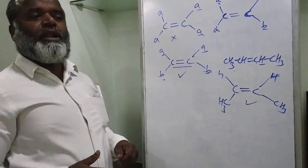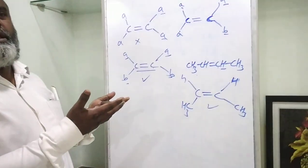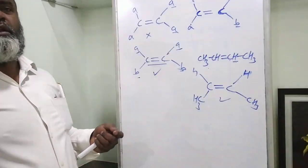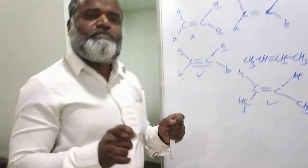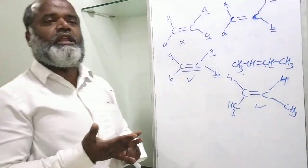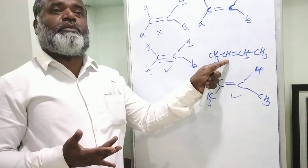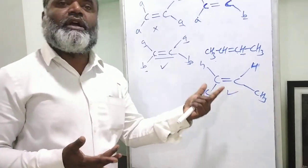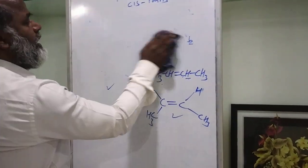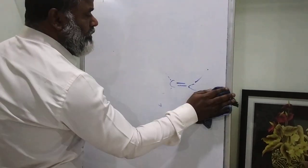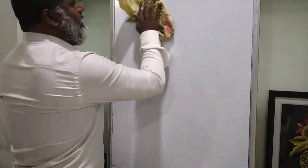To summarize: if any molecule needs to show geometrical isomerism, check two conditions. First, there must be a carbon-carbon double bond. Second, both double-bond-carrying carbons must be attached to two different groups. Ethylene fails, propylene fails, 1-butene also fails. But 2-butene satisfies both conditions. Once conditions are clear, the next step is to write down its cis and trans forms.